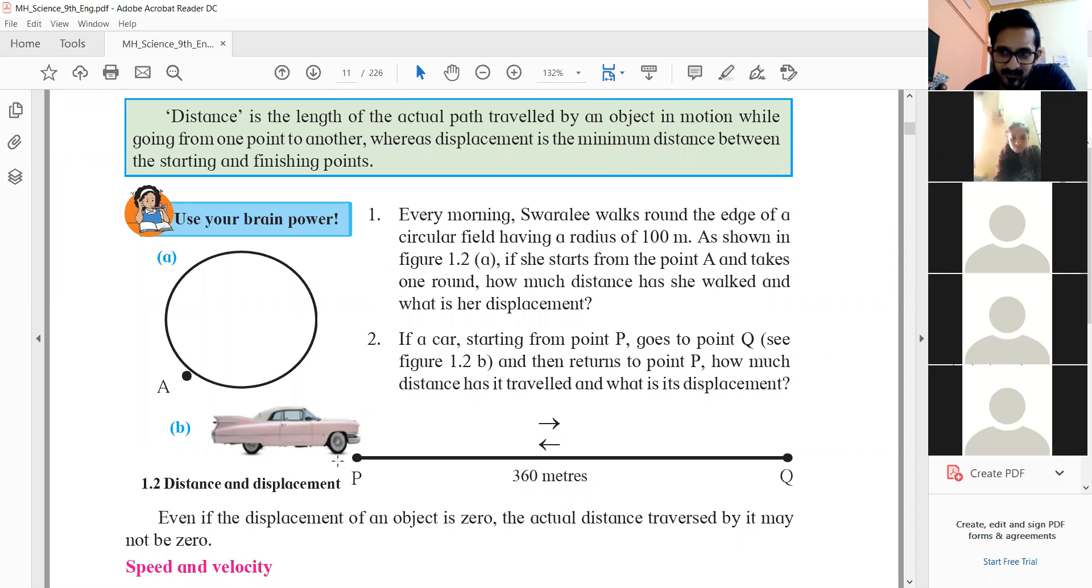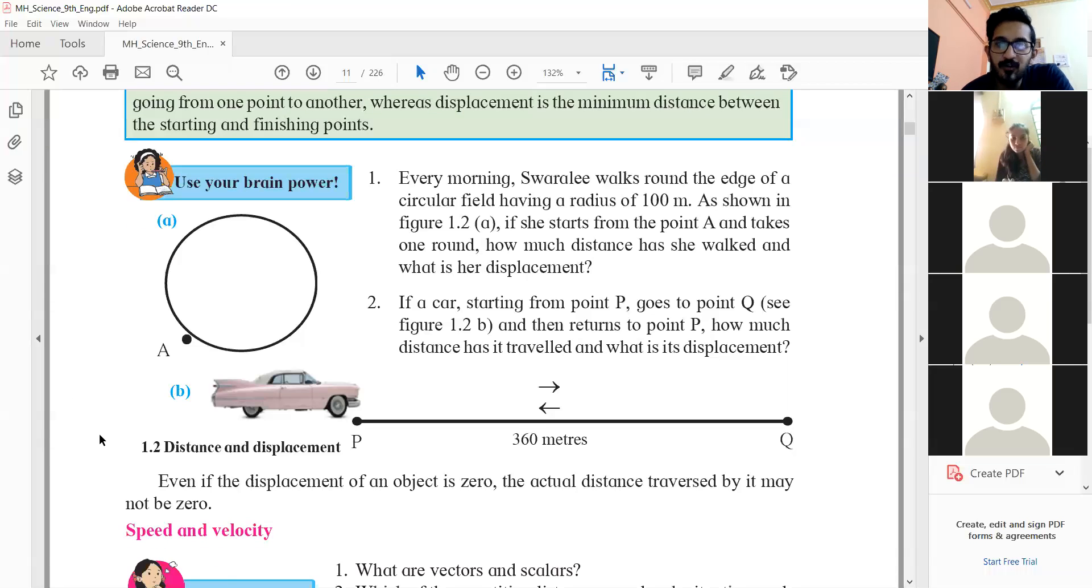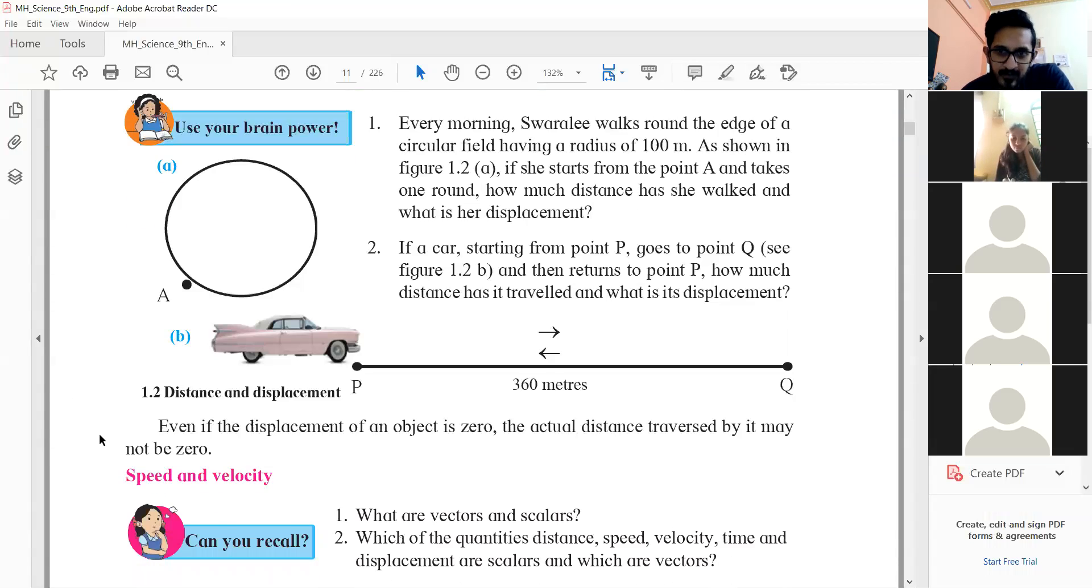So displacement will be zero. And how much distance will be this time? 720. Very good. So 360 here and then 360 again. So even if the displacement of the object is zero, the actual distance travelled is not zero.